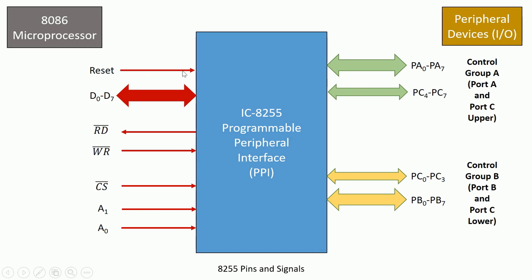Lastly, there is a Reset pin which resets the functionality of IC8255 so it can be re-programmed. There are also VCC and ground signals, which are obvious for every IC. To summarize: IC8255 consists of Control Group A (Port A and Port C upper, PC4 to PC7) and Control Group B (Port B and Port C lower, PC0 to PC3). A1 and A0 are the very important signals used to select ports and the control register; the remaining signals are Read bar, Write bar, bi-directional data lines, Chip Select, and Reset.